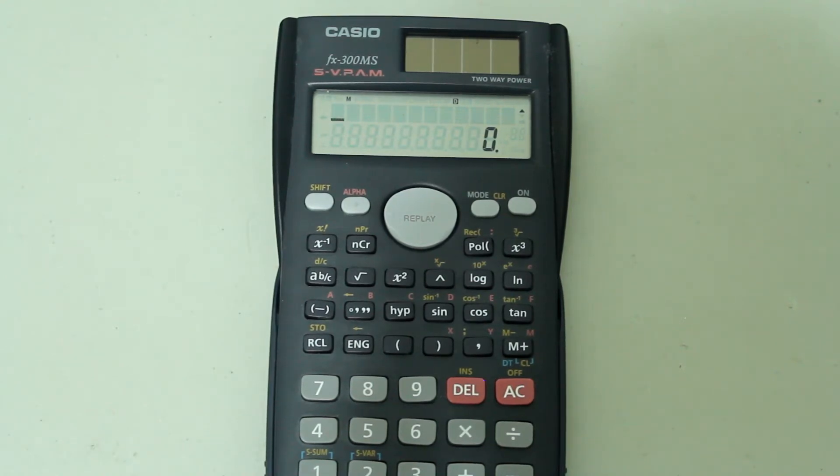In engineering notation, the exponents are in powers of 3. So 3, 6, 9, or negative 3, negative 6, negative 9.